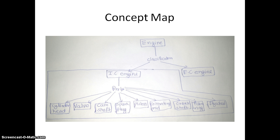First of all, this is my concept map in which the engine is shown, and after that its classification is there. The classification includes the internal combustion engine and the external combustion engine. In the internal combustion engine, the parts are the cylinder head, valve, camshaft, and other parts given here. We will discuss them one by one.